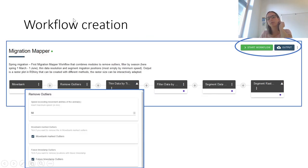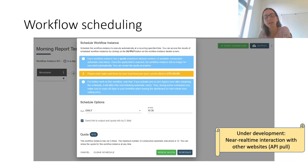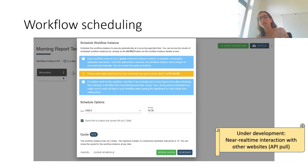One can start the workflow run by clicking on Start Workflow, and one can then afterwards access the output by this button. Or one can schedule a workflow so that it runs daily or weekly at a certain time, and one can select to receive an email after the workflow run where one can click on a link and directly access the output. We are also presently developing near real-time interaction with other websites, so that other websites can, like in an API, pull some results from workflows into their site.